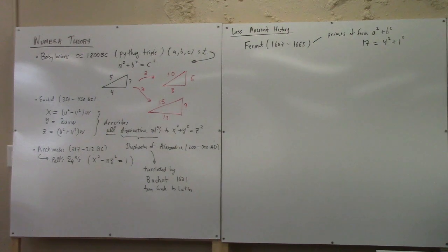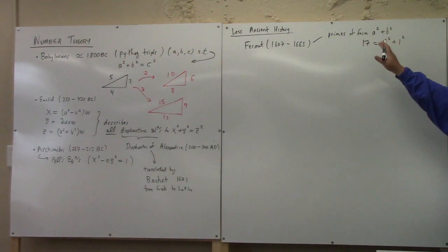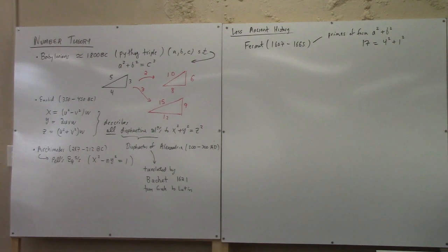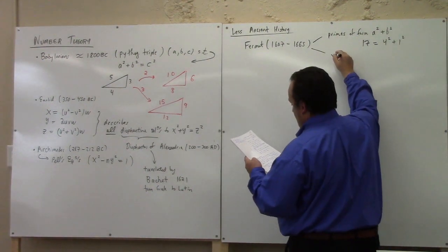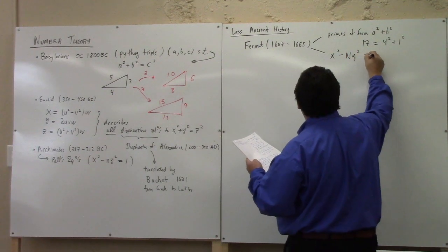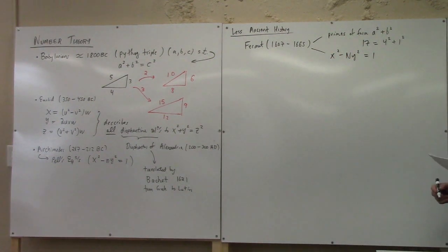And he proved that every prime congruent to one mod four can be written in the form A squared plus B squared. He used something called the method of infinite descent to prove this claim. We're going to get back into this result and look at it in detail in later lectures. He also studied Pell's equation in the form X squared minus NY squared equal to one in a contest with a couple of English mathematicians, Wallace and Bruckner. He did a lot more than this.